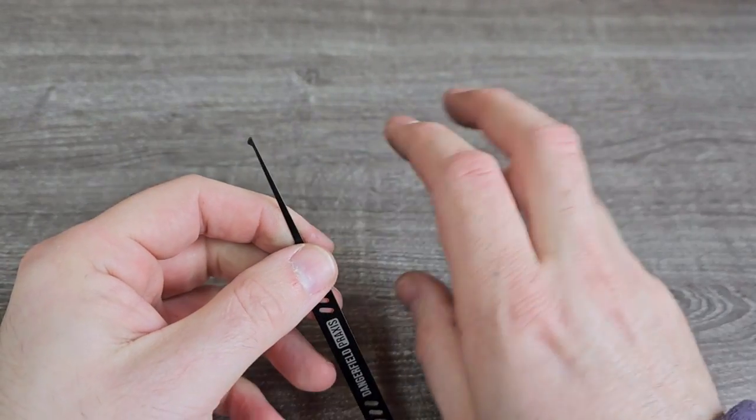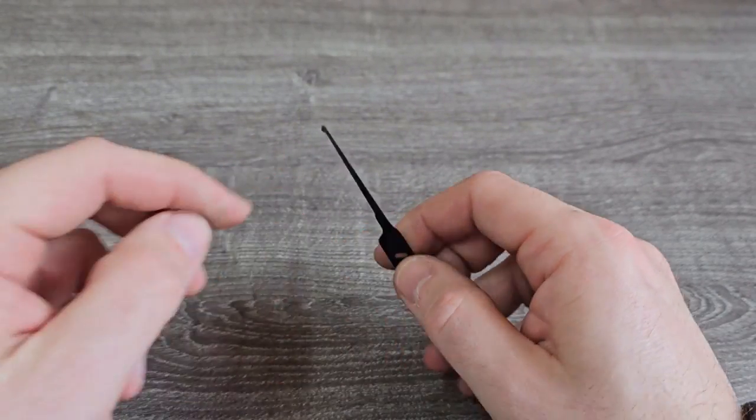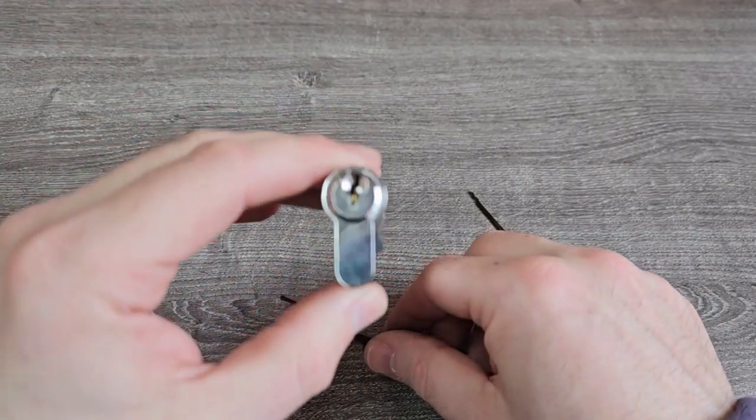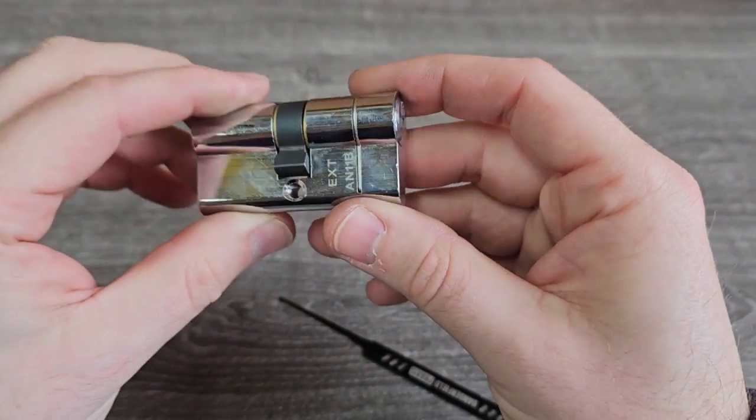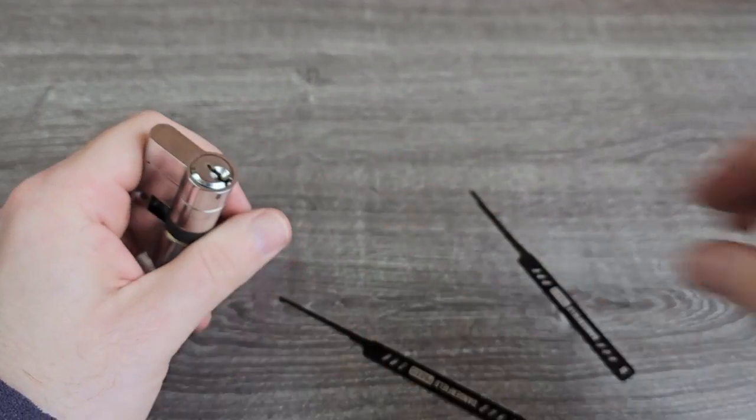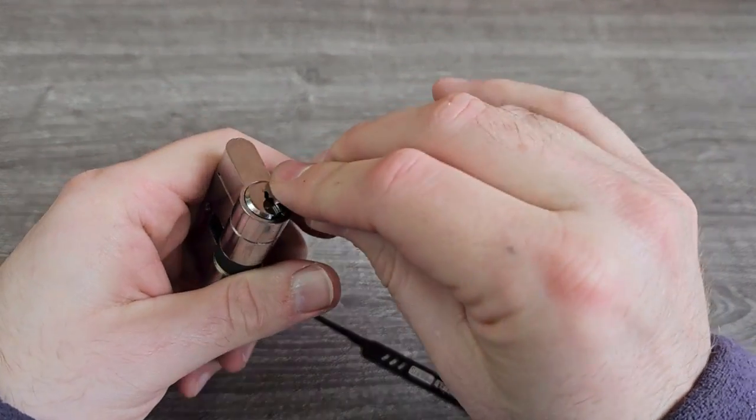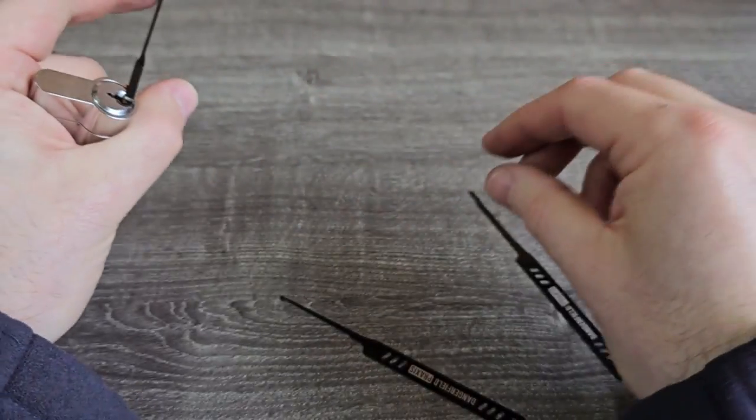I've got an S rake, sometimes called a W rake, and I've got half diamond. In the last video I did a bit of rocking and scrubbing, but this is probably what most people - this is what most raking beginners learn first.